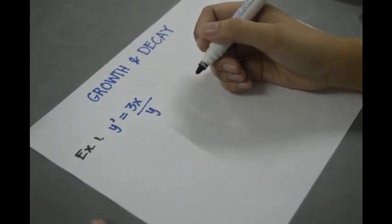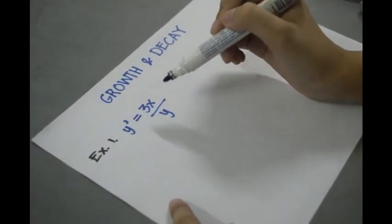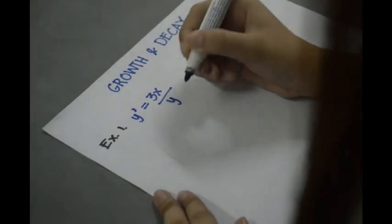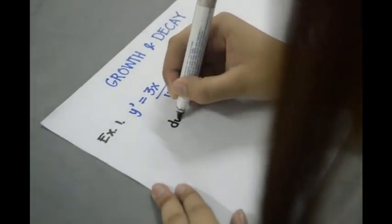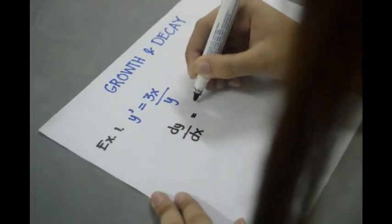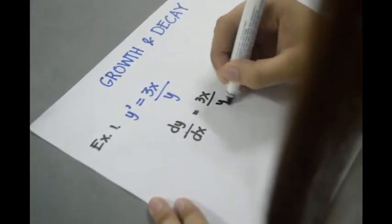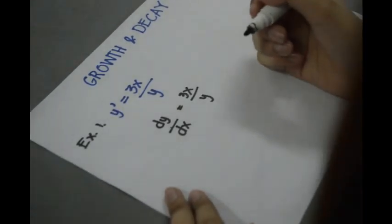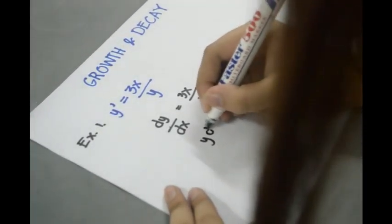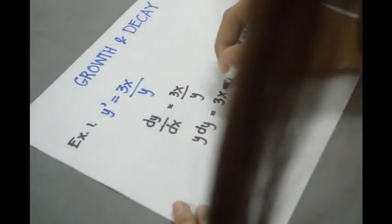Solve the differential equation where y prime is equal to 3x over y. To solve this, dy over dx is equal to 3x over y. We will cross-multiply to get y dy is equal to 3x dx.